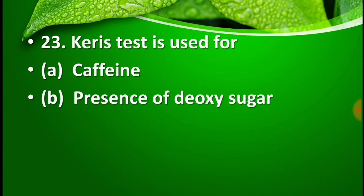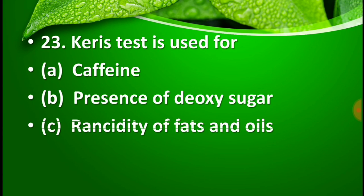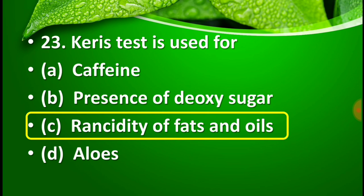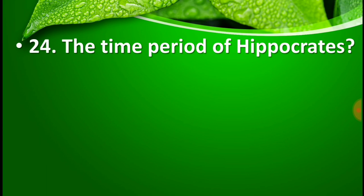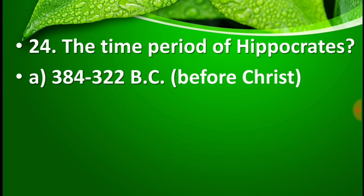Question number 23: Kreiss test is used for — option A: caffeine, option B: presence of deoxy sugar, option C: rancidity of fats and oils, and option D: aloes. The right answer is option C — rancidity of fats and oils. Kreiss test is performed to check the rancidity of fats and oils.